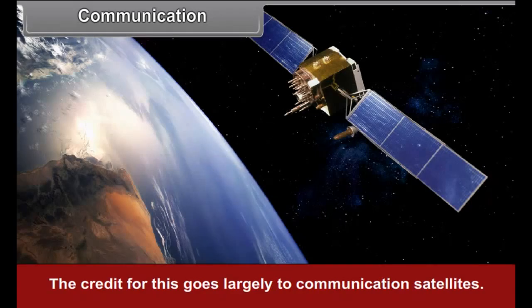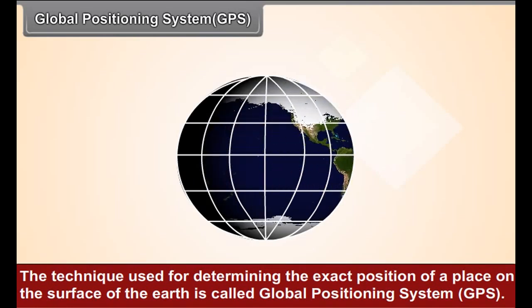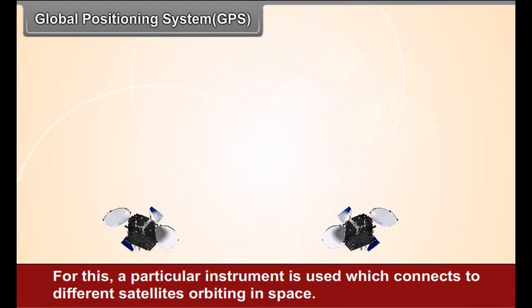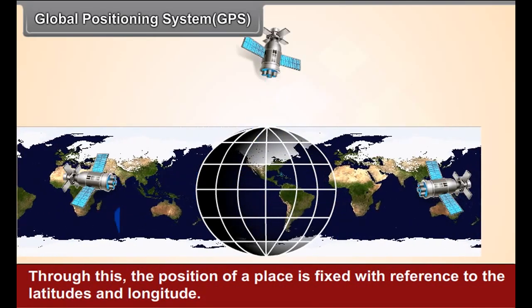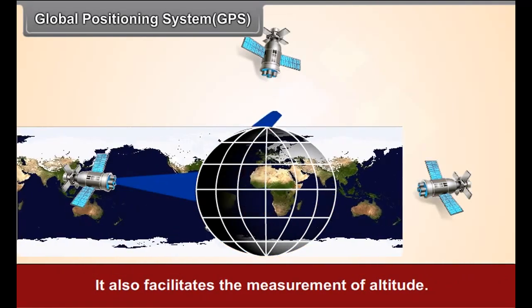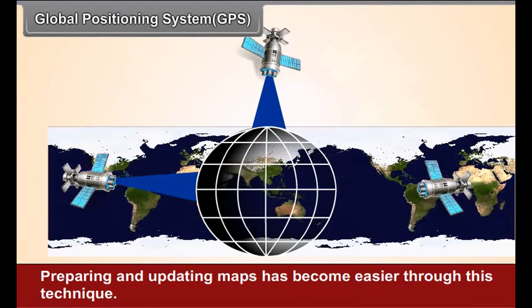Global Positioning System: The technique used for determining the exact position of a place on the surface of Earth is called Global Positioning System. For this, a particular instrument is used which connects to different satellites orbiting in space. Through this, the position of a place is fixed with reference to latitudes and longitudes. It also facilitates the measurement of altitude, and preparing and updating maps has become easier through this technique.